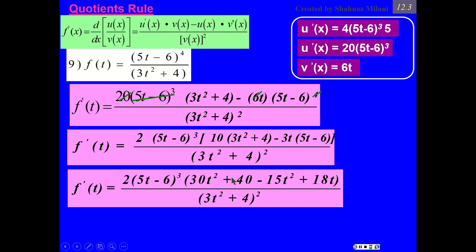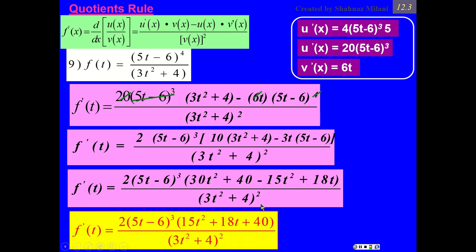We need to clean up. Inside the parenthesis, combine like terms. 30t to exponent 2 minus 15t to exponent 2 is 15t to exponent 2, and this 18t, carry it down, positive 40, carry it down. I do not have any GCF inside this parenthesis. That means that's it. That is my answer.